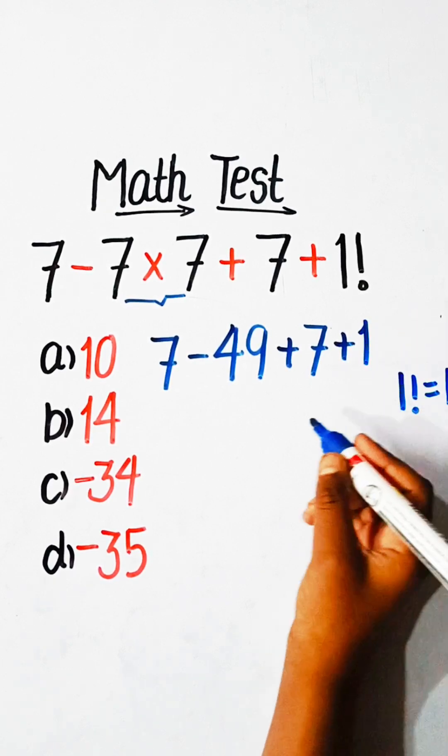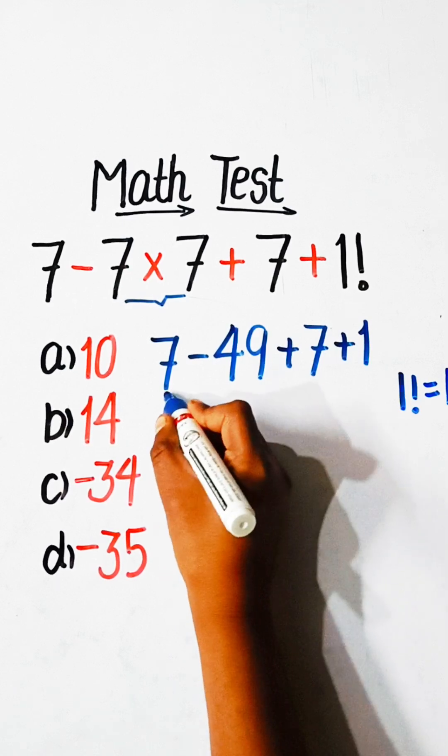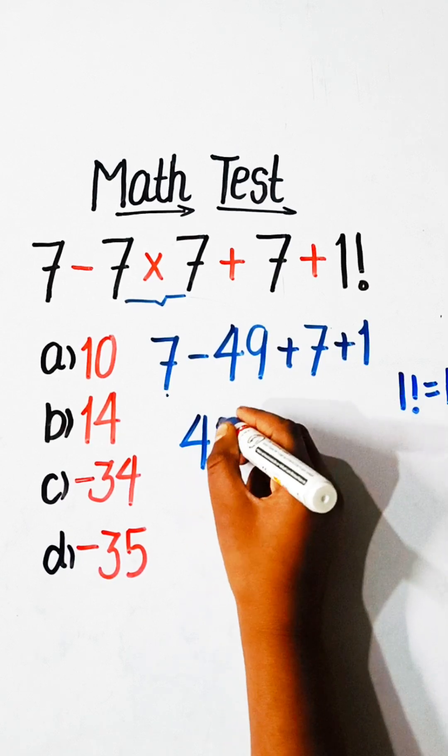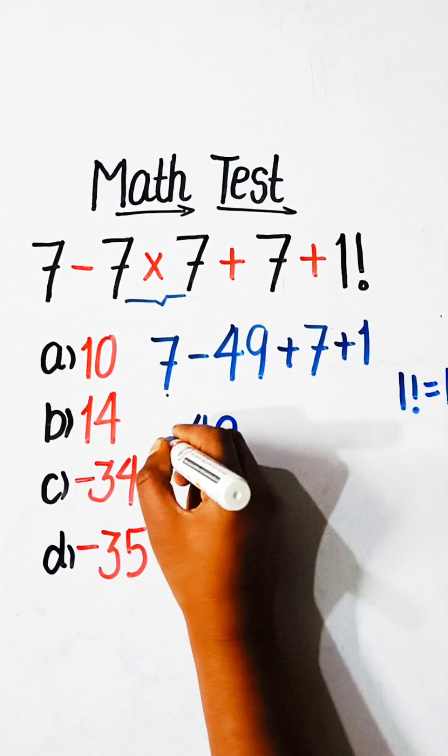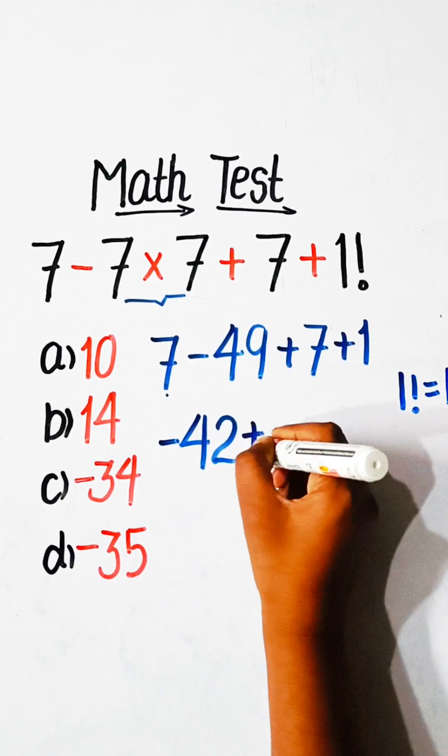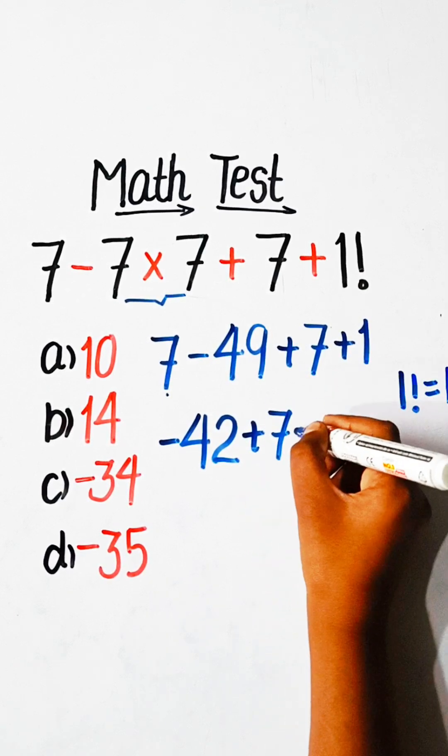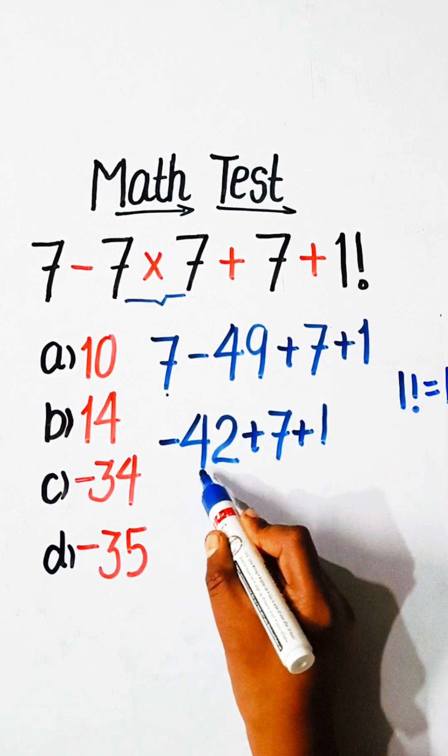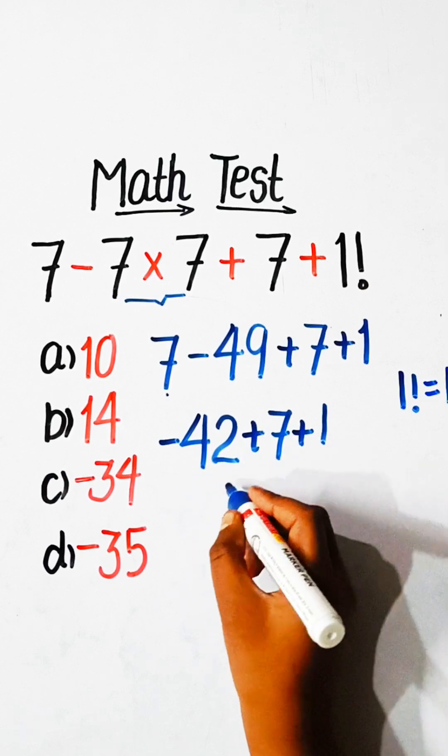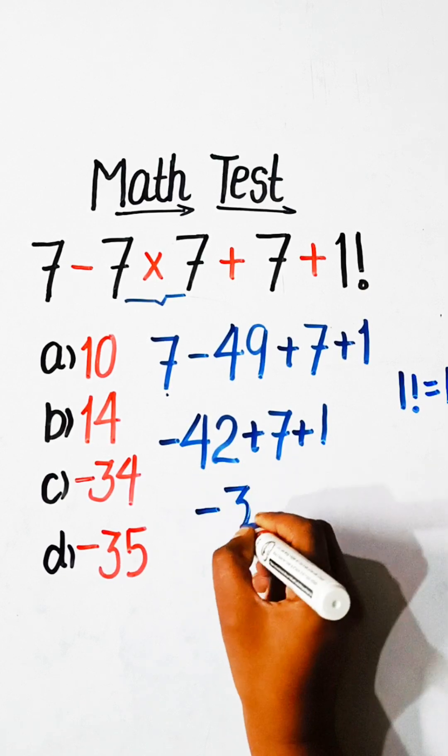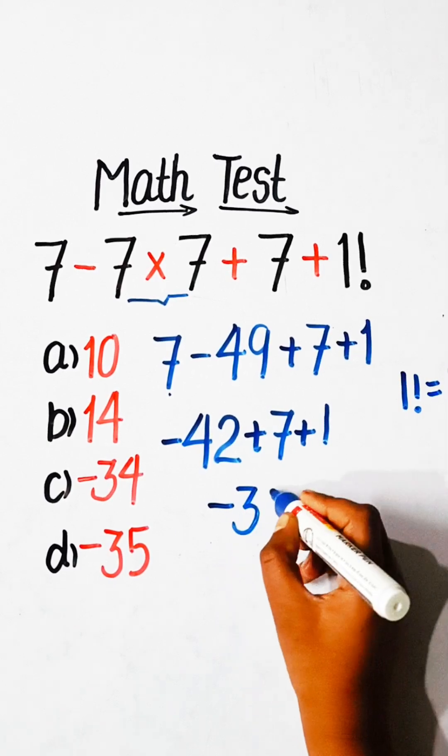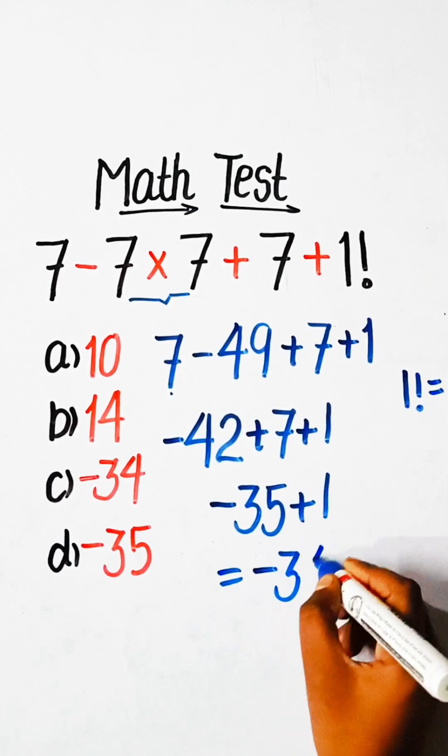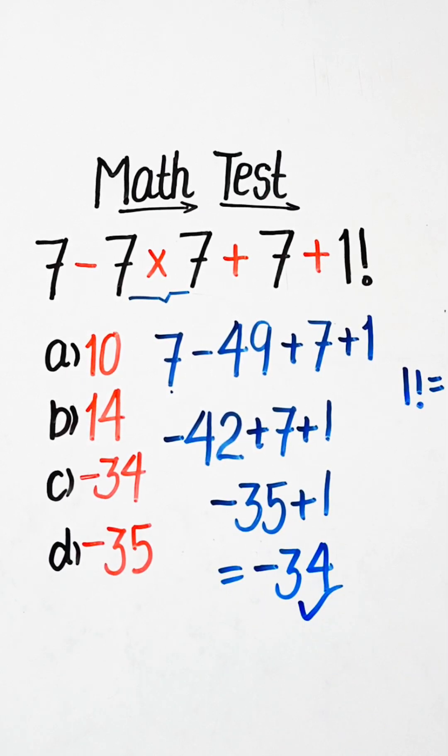So let's solve this: 7 minus 49 is minus 42, minus 42 plus 7 is minus 35, minus 35 plus 1 equals minus 34. So minus 34 will be our correct answer.